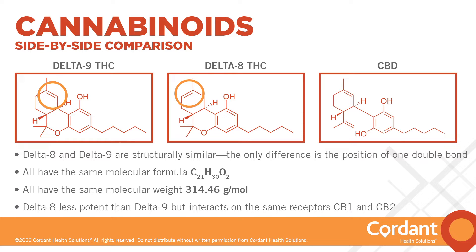The structure of CBD also looks very similar to delta-8 and delta-9, except for an open ring, which plays a significant role in how the body reacts to this compound and why it doesn't have a psychoactive effect on humans. Importantly, all three share the same molecular formula and the same molecular weight, and these factors are what make differentiating them in drug testing challenging.